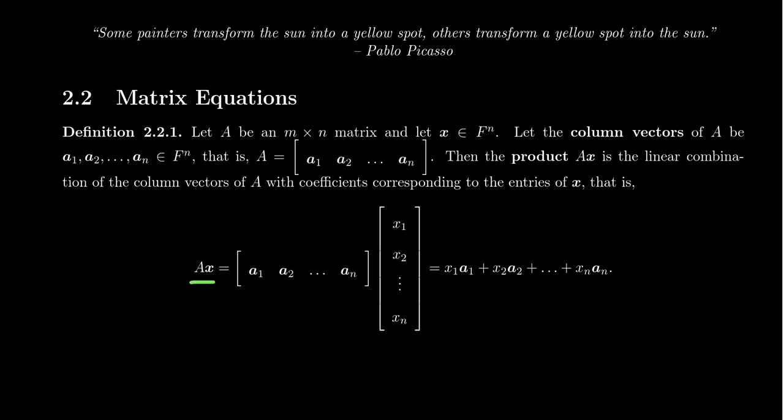The product A times X, this will be the matrix A, which has column vectors A1, A2, A3, up to AN, because it's an M by N matrix.